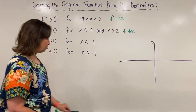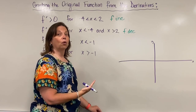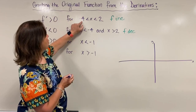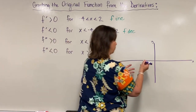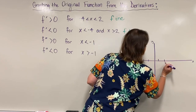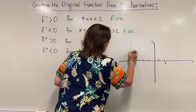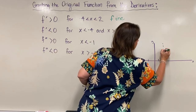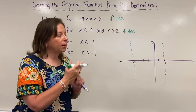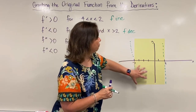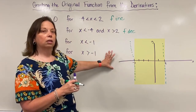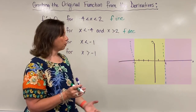We have a lot of information to sketch most of the graph. The first derivative is positive from negative 4 to 2, so I'll mark negative 4 and positive 2 on the graph with dashed lines to partition the graph into sections: the middle zone between negative 4 and 2, the zone to the left of negative 4, and the zone to the right of 2.